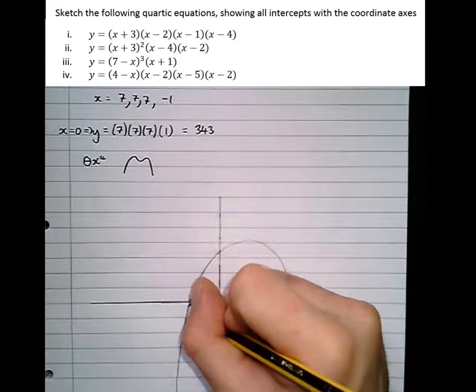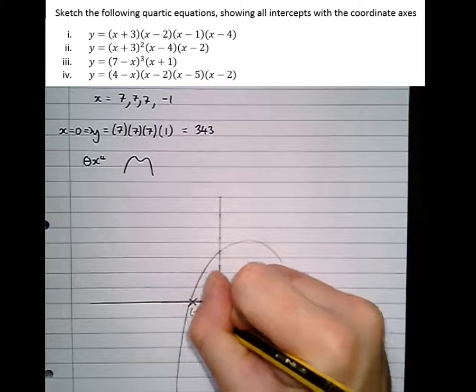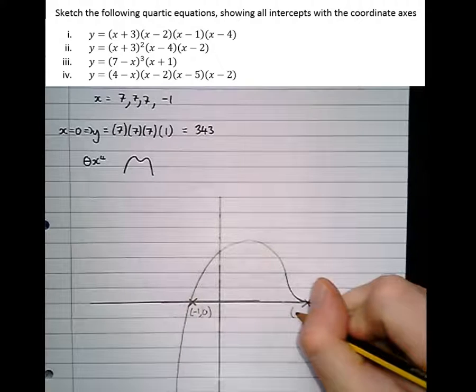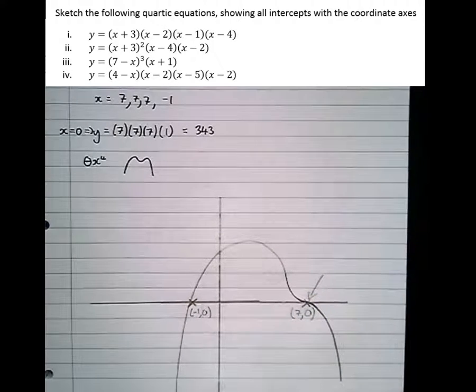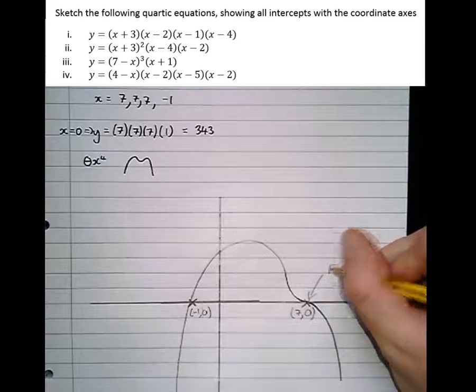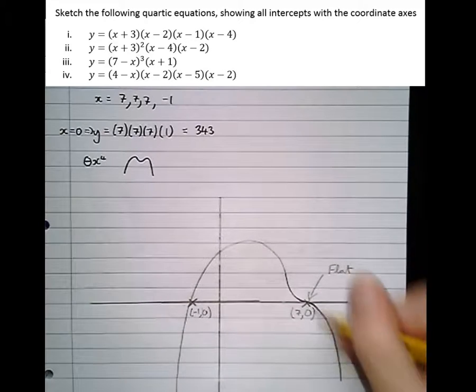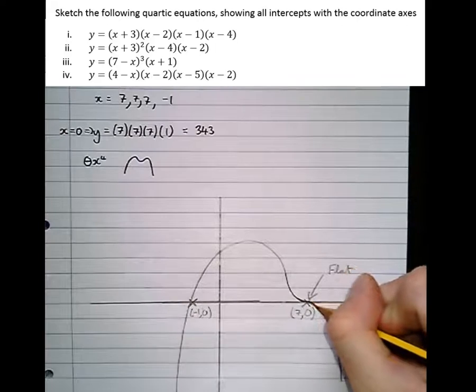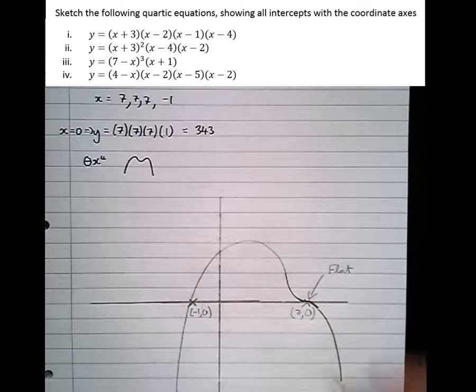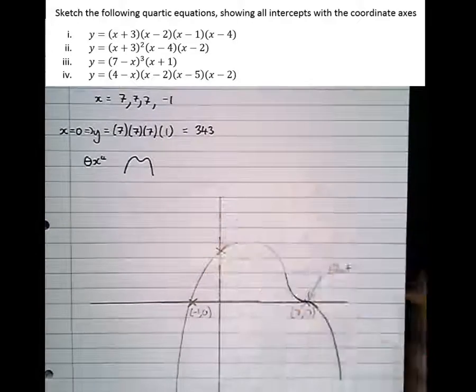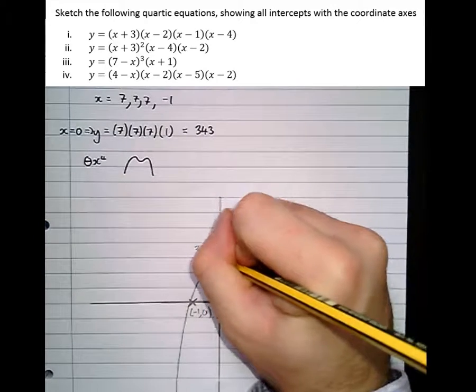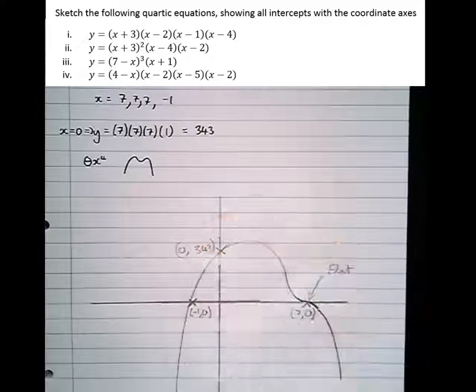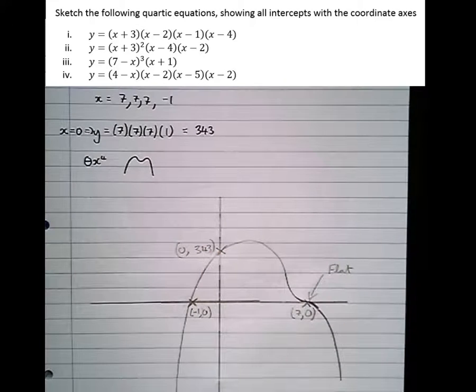So we've got minus 1, 0; 7, 0. And the feature of this that gets the marks, it must be flat as it crosses the axis. And that's what I'll get a mark. And then the intercept here, which is 343, x-coordinate 0. So that's what a triple root looks like on a quartic.